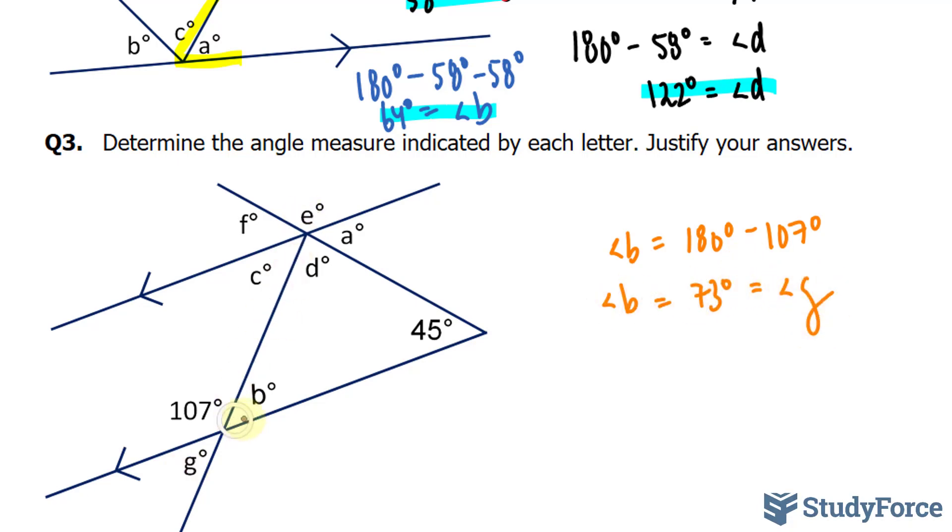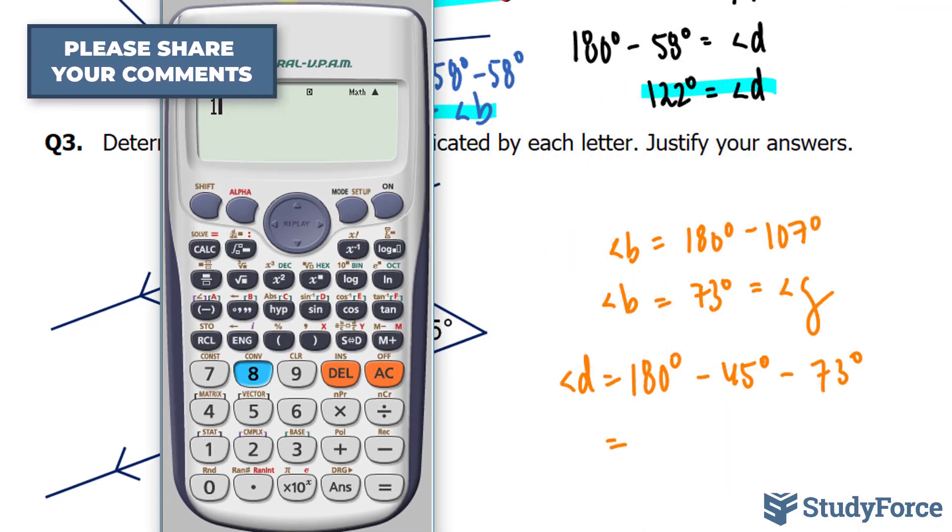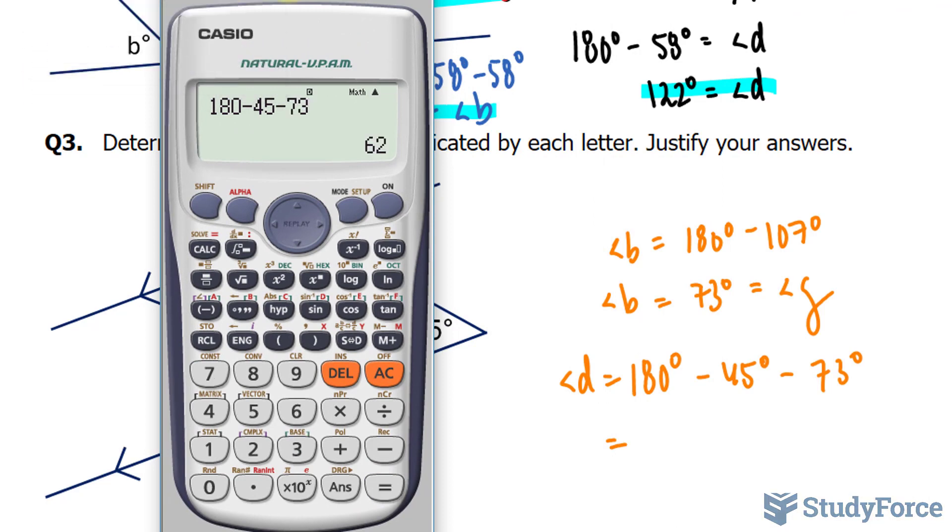We have a triangle right here, and a triangle adds up to 180 degrees. So I can find D by taking 180 minus 45 minus what I found for B. Let's use our calculator. 180 minus 45 minus 73. We end up with 62.